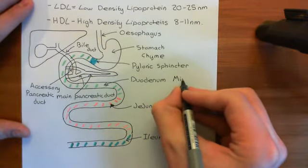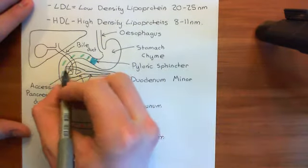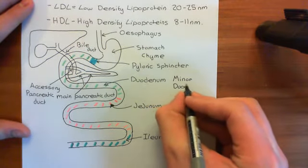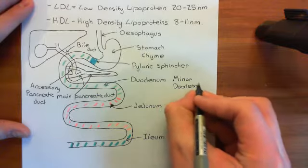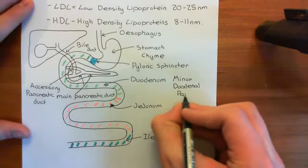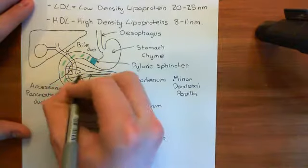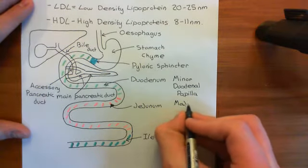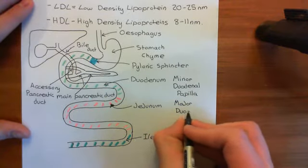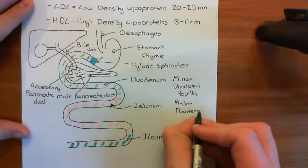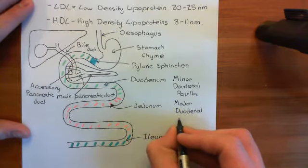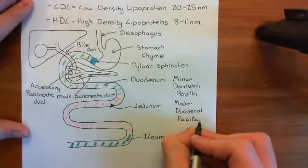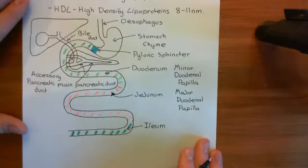The hole where the accessory pancreatic duct joins the duodenum is known as the minor duodenal papilla. And the point where the main pancreatic duct joins the duodenum is called the major duodenal papilla. So you have these two landmarks — the minor duodenal papilla and the major duodenal papilla — which are basically where these pancreatic ducts join the duodenum. So there's our anatomy. Now let's talk about the physiology.